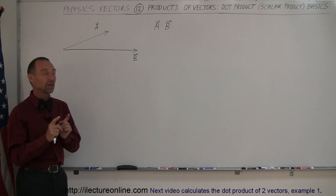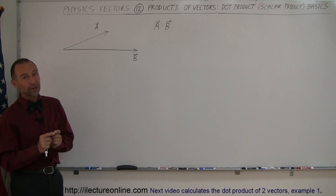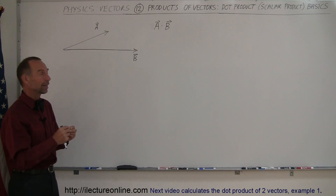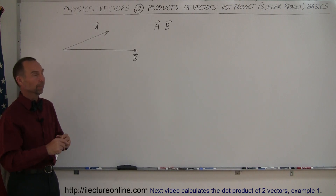The reason why they call a dot product a scalar product is because the result of a dot product is a scalar quantity. It's no longer a vector — it's just a number.